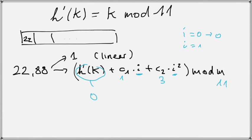In our example, c1 is 1, c2 is 3, and m is 11. If we plug all of this in, now i is 1, and i squared is 1 squared, which is also 1.